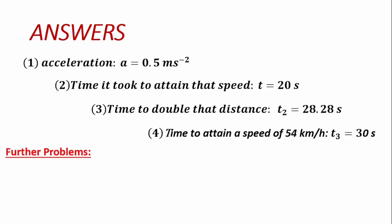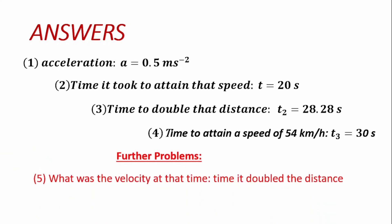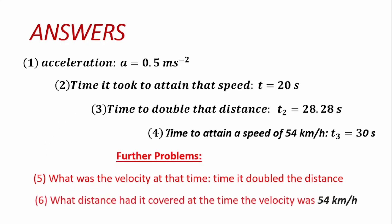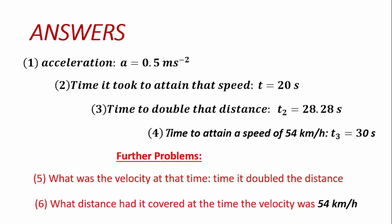There are certain problems you may want to try your hand at. First, you may want to find the velocity at the time the distance was doubled — that is, what is the velocity of the vehicle when T2 is 28.28 seconds, or when the distance is 200 meters. Also, you may want to work out what distance the car would have traveled by the time it was moving at a speed of 54 km per hour — noting that we've calculated the time to attain that speed to be 30 seconds. If you can do this, you can solve any problem involving uniformly accelerated motion.